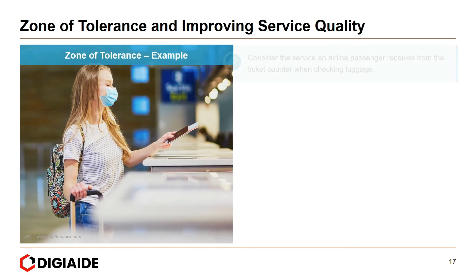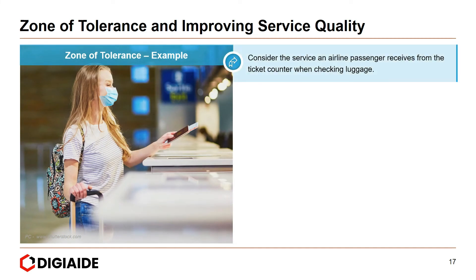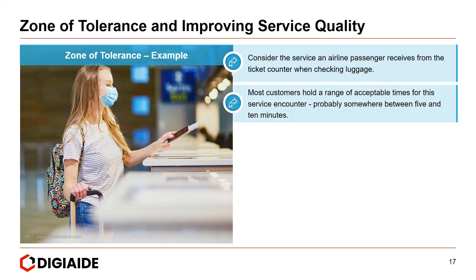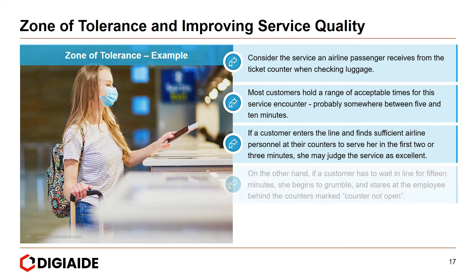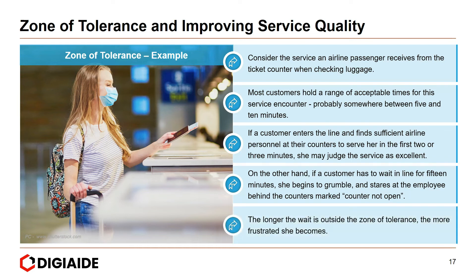Consider the service an airline passenger receives from the ticket counter when checking luggage. Most customers hold a range of acceptable times for this encounter, probably somewhere between 5 and 10 minutes. If a customer is served in the first 2 or 3 minutes, she may judge the service as excellent. On the other hand, if she has to wait 15 minutes, she begins to grumble. The longer the wait is outside the zone of tolerance, the more frustrated she becomes. So here, 2 to 3 minutes would be the desired service, and 15 minutes would fall below adequate service.